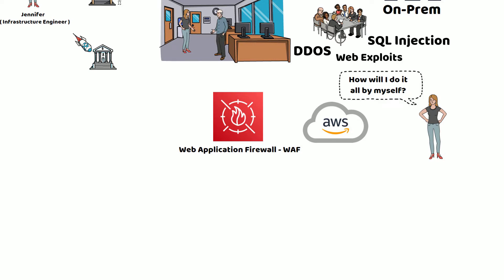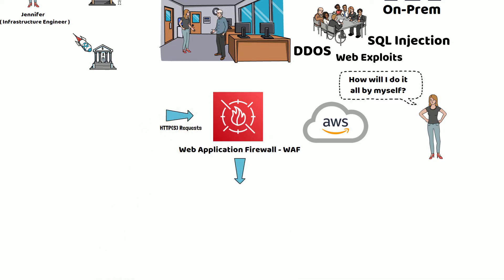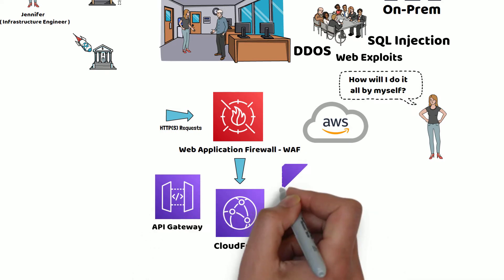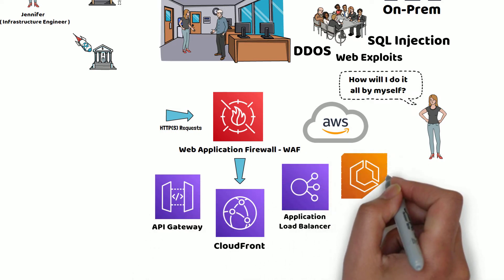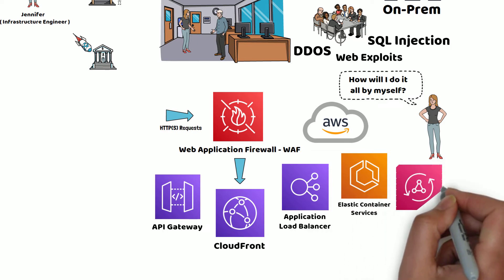As a result of Jennifer's organization using various AWS services, WAF can help monitor and protect HTTPS requests that are forwarded to CloudFront, API Gateway, Application Load Balancers, Elastic Container Services, and AppSync Services.